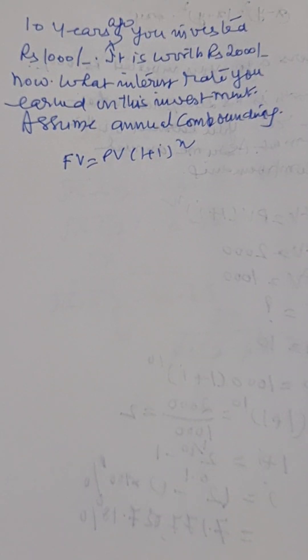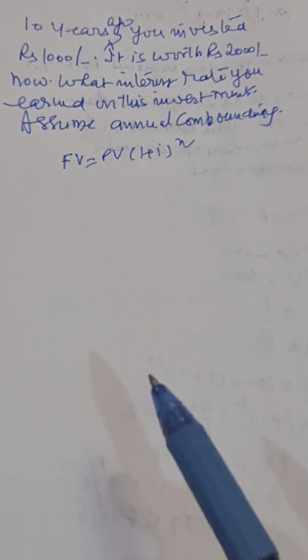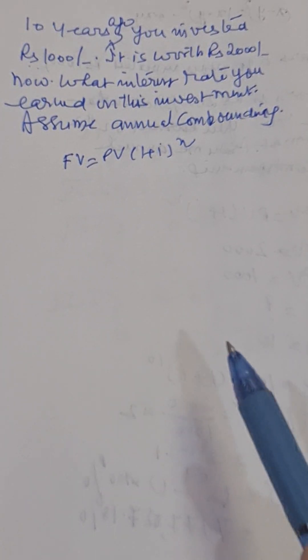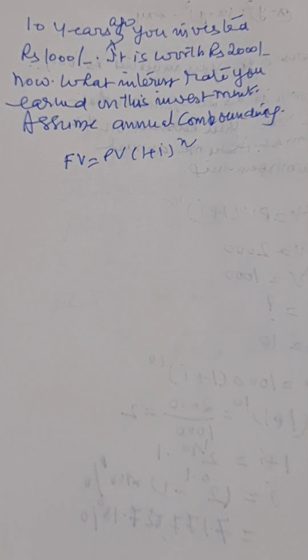FV is equal to PV one plus I raise to the power N. Here FV is future value and PV is present value. I is the interest rate and N is the number of compounding periods.